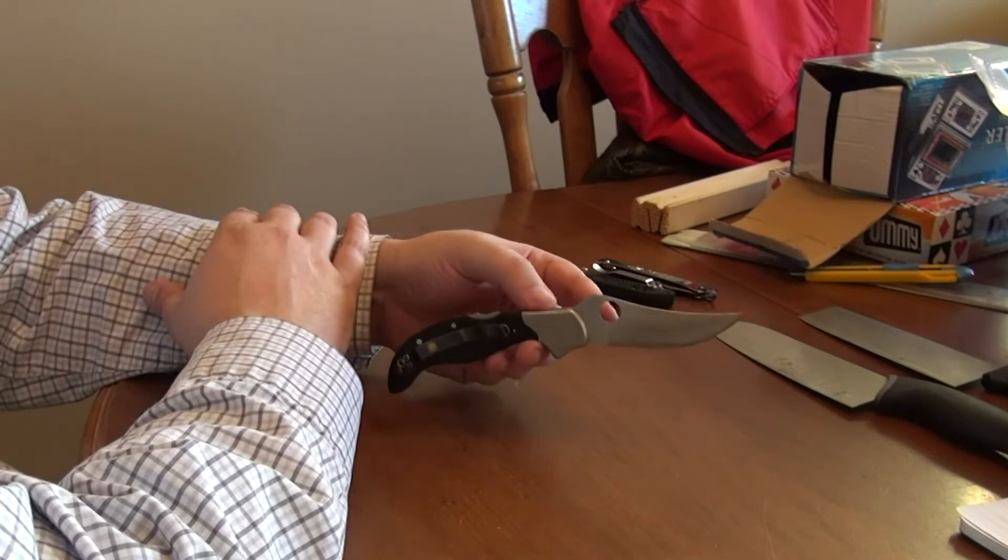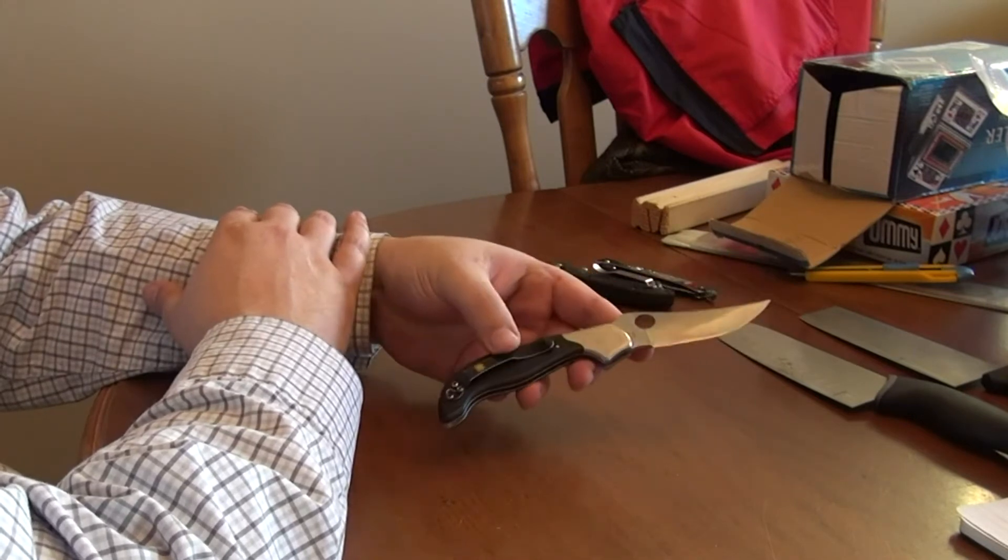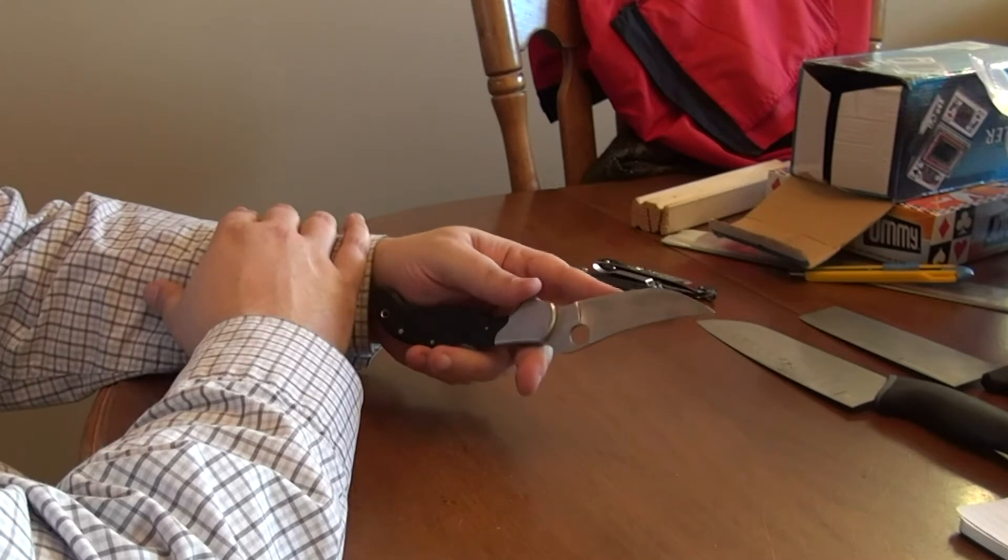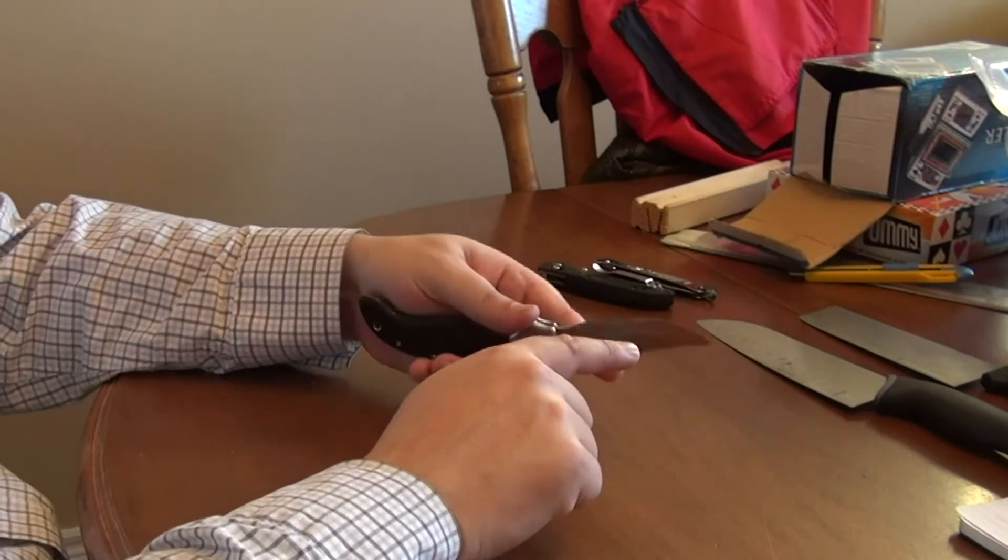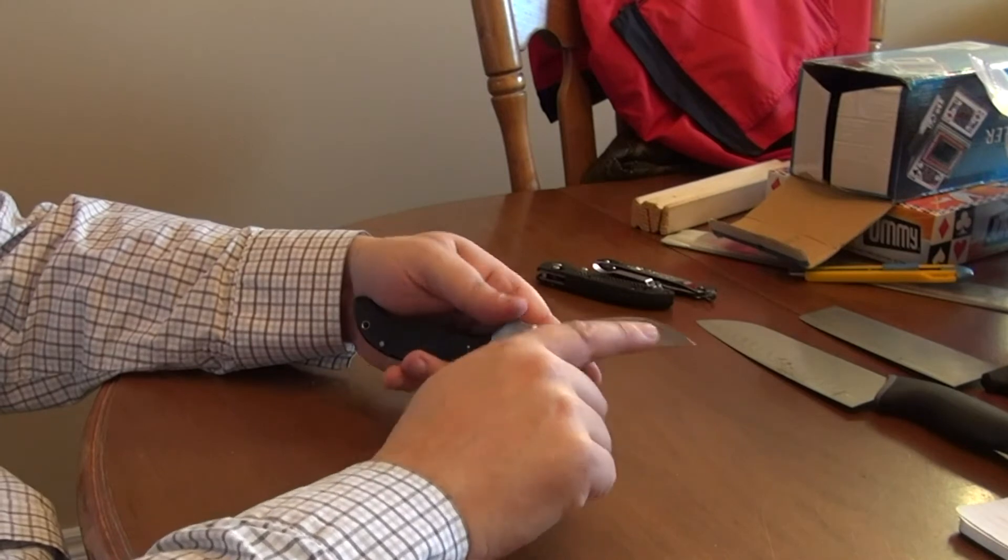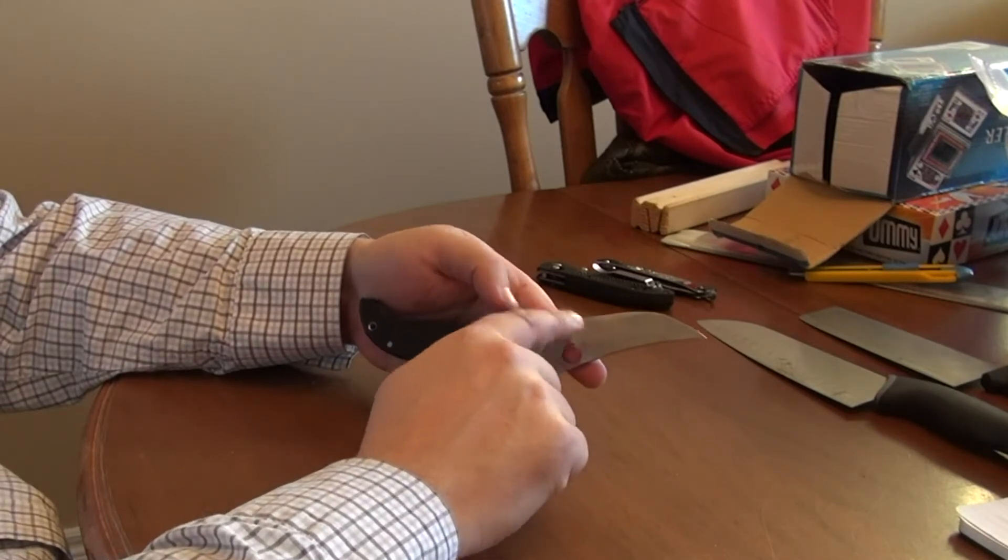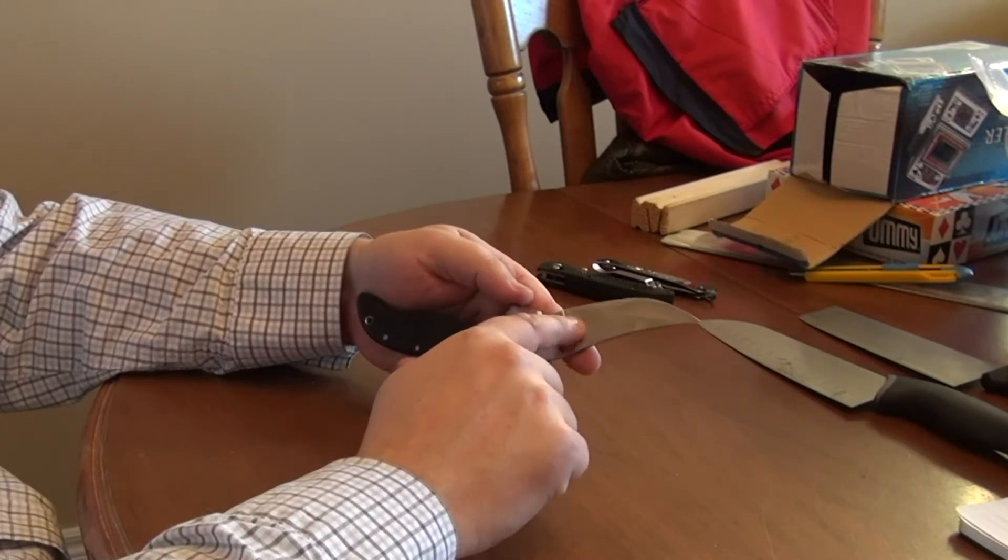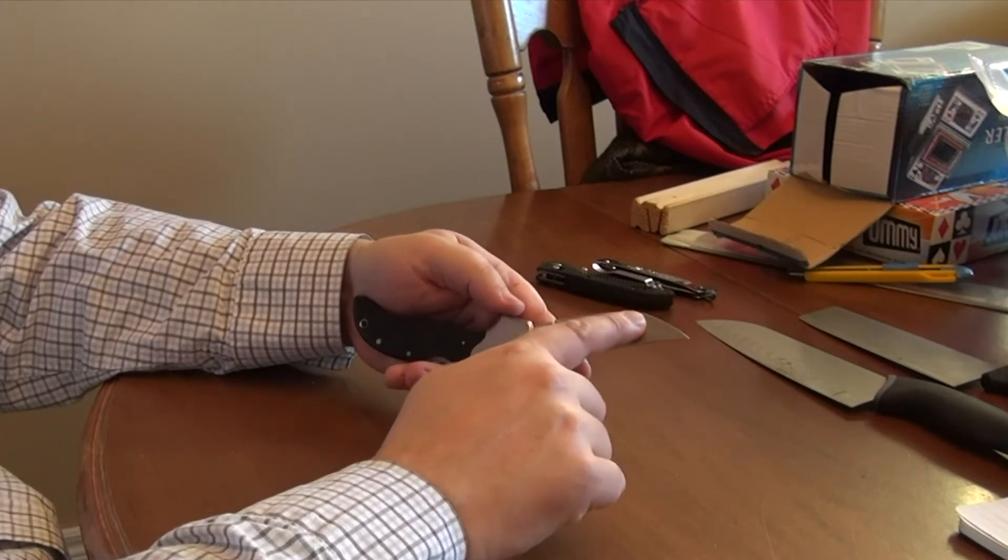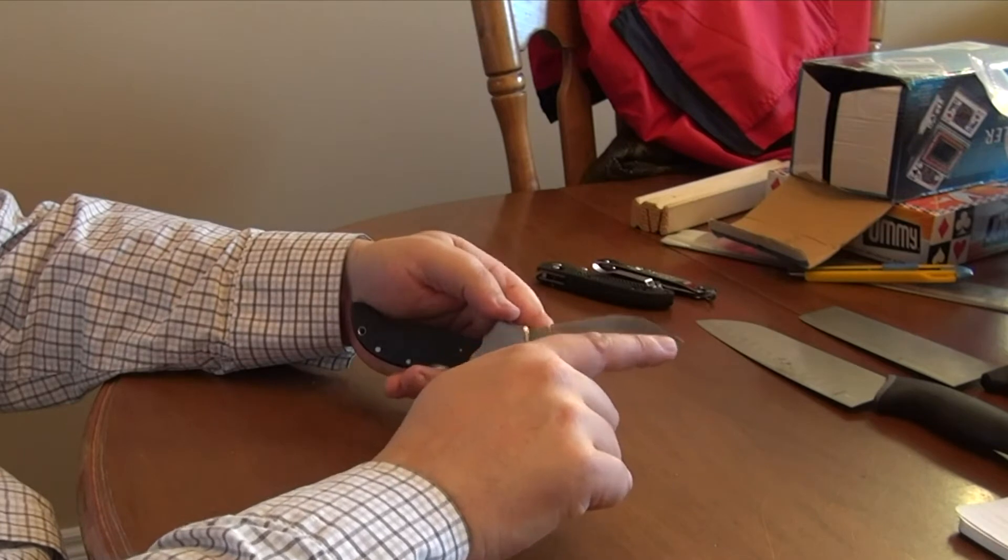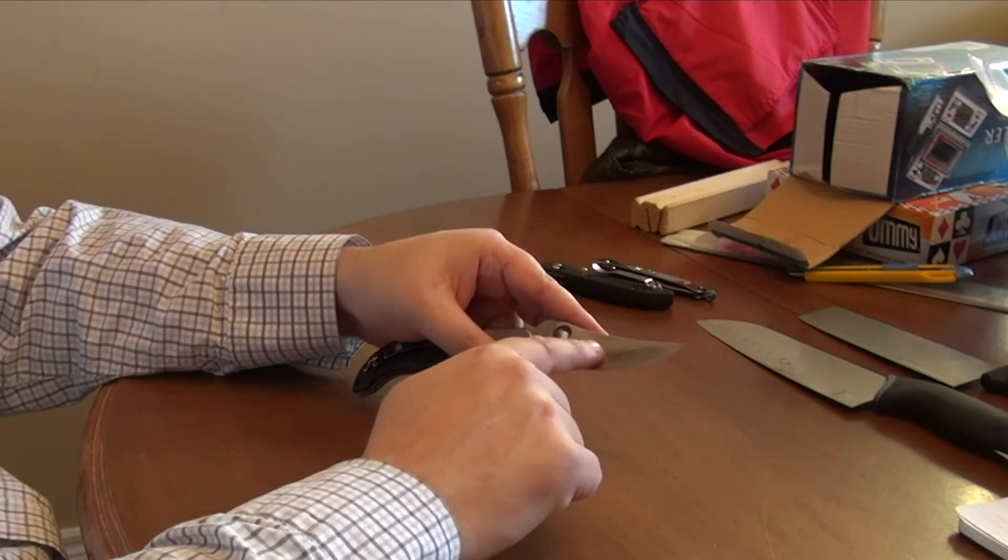So I decided to address some of the problems, and I rounded out the tip and reground the blade. And you can see now that there's still a significant hollow in the front section, and the rear section down here, where it goes in the index finger choil, is completely flat. That wasn't by design. The whole blade was ground at the same angle. The hollow grind just gets deeper as you move towards the tip, so it remained.